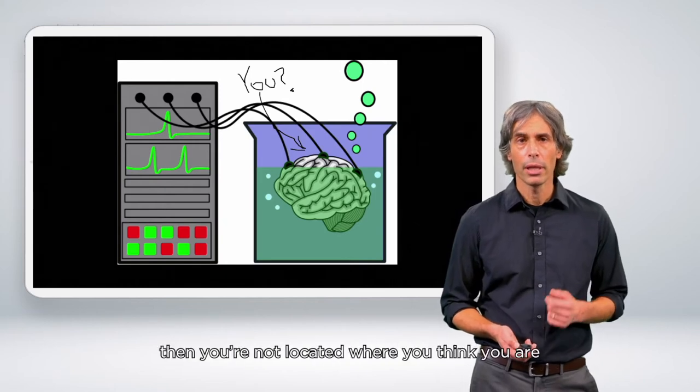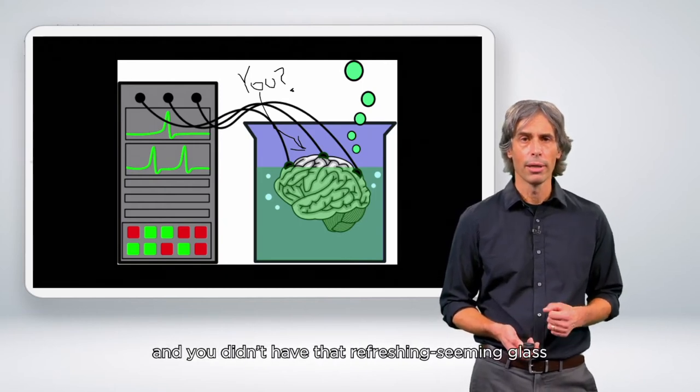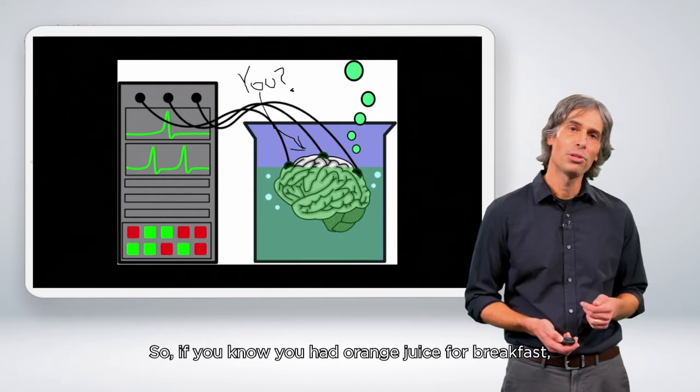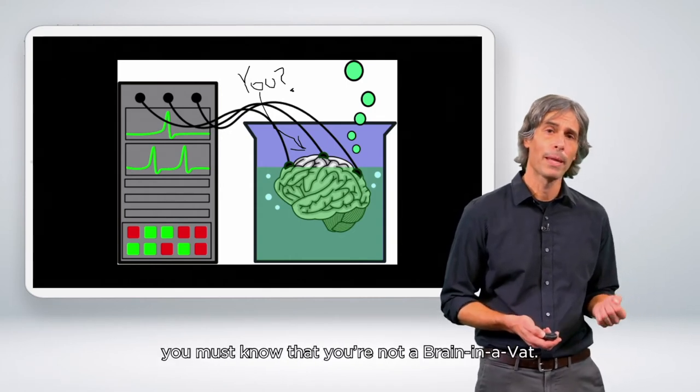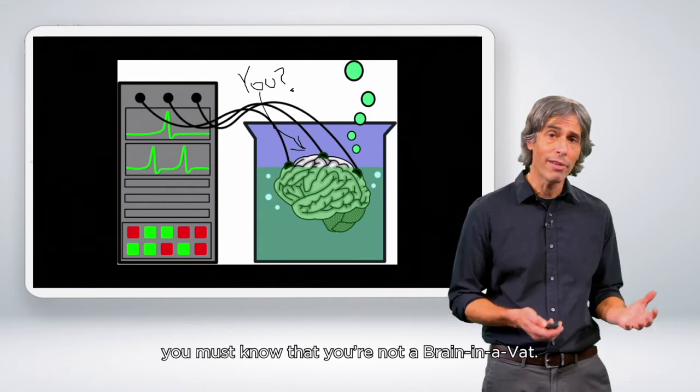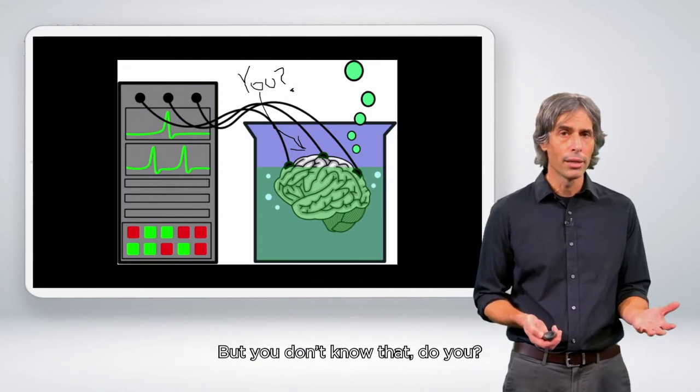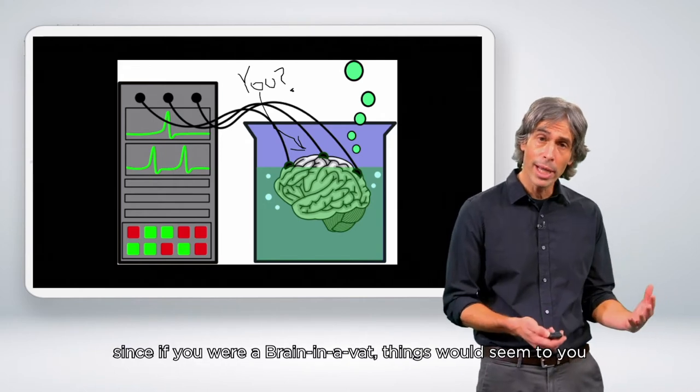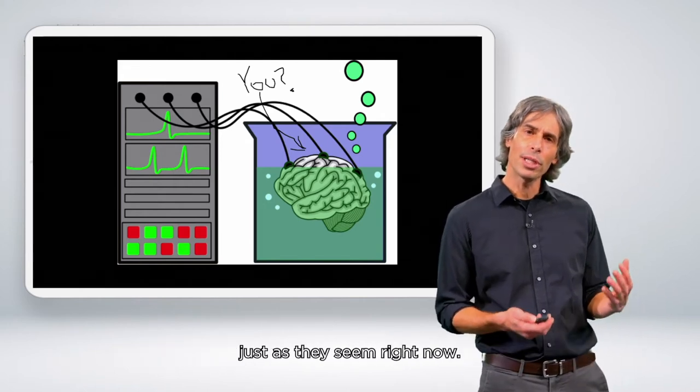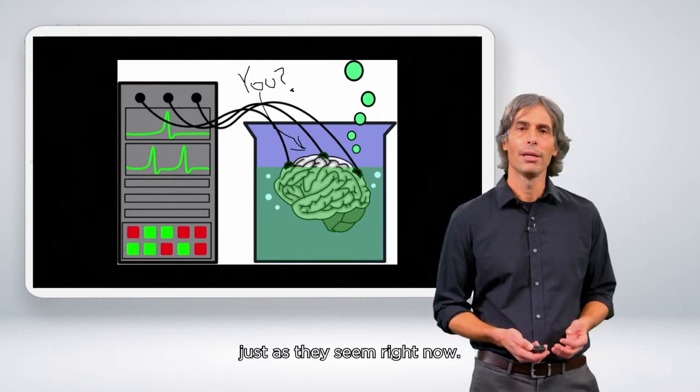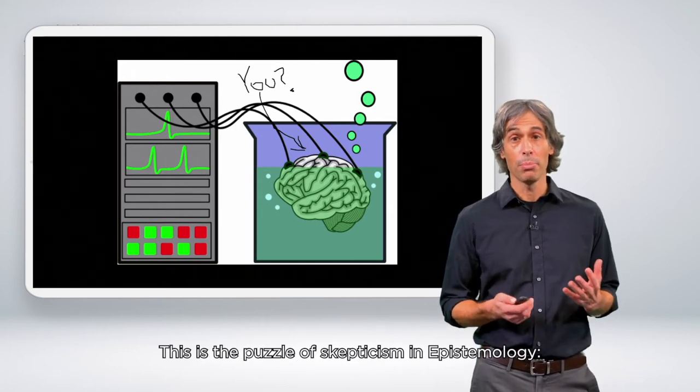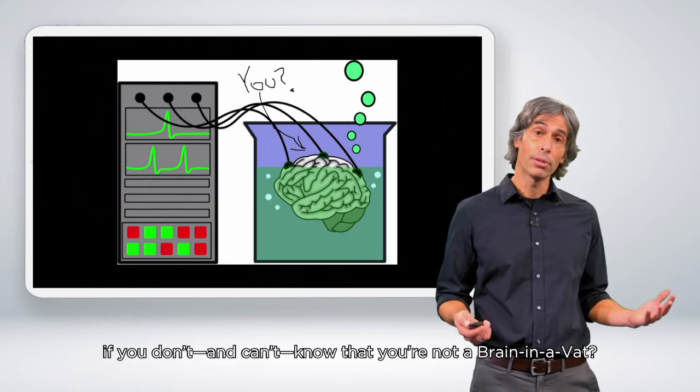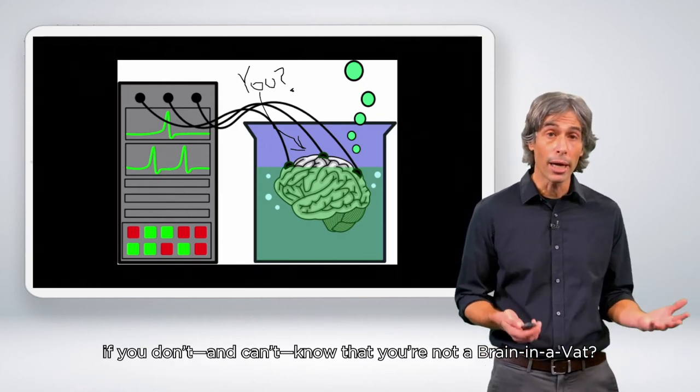If you are a brain in a vat, then you're not located where you think you are, and you didn't have that refreshing glass of orange juice for breakfast either. So if you know you had orange juice for breakfast, you must know that you're not a brain in a vat. But you don't know that, do you? There's no way to rule out the possibility, since if you were a brain in a vat, things would seem to you just as they seem right now. This is the puzzle of skepticism in epistemology. How can you know the things you claim to if you don't and can't know that you're not a brain in a vat?